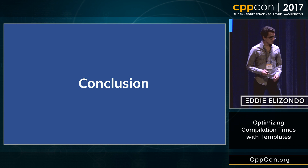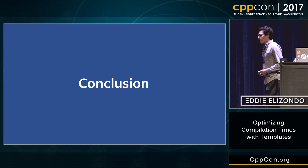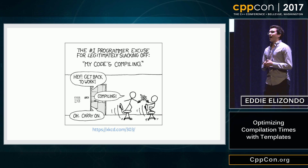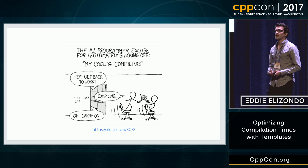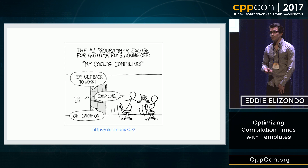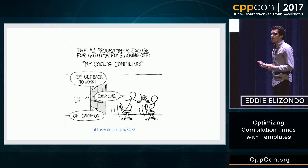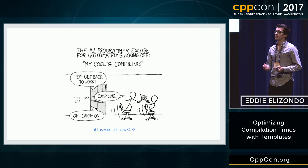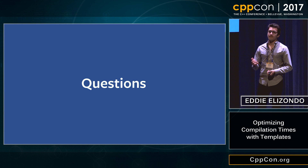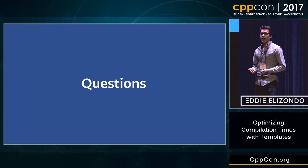Why should we care about template instantiation times and compilation times in general? At every company, whenever we're waiting on compilation times, it's just wasted time — time we can spend iterating faster, improving our code, or getting results faster. It's never fun to wait on compile times. If we can improve that, we're not only improving ourselves but everyone in our company — enabling them to move faster, iterate faster, and get faster results. Hopefully with this talk you get an insight into how to get these metrics and dive down into every template to figure out the correct actions to improve compile times.